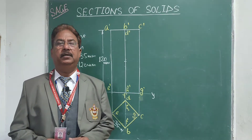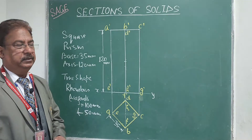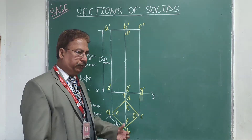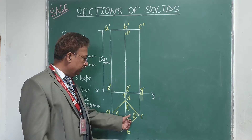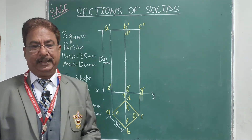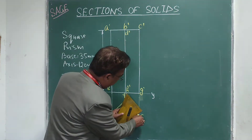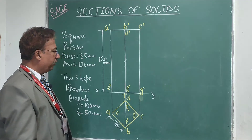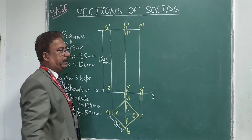The true shape of the section will be a rhombus of diagonals 100mm and 50mm. To get a rhombus, we need to place the square prism with the base on the HP with all base sides equally inclined to the VP. So initially, I have drawn this figure with all sides of the square inclined 45 degrees to XY.